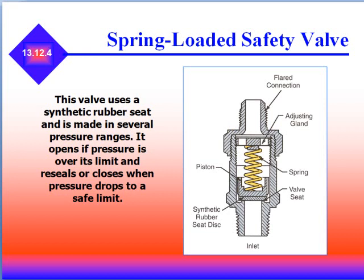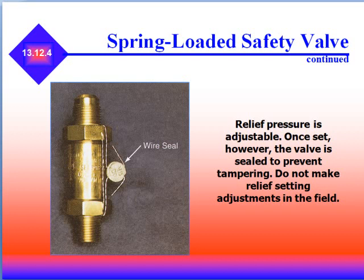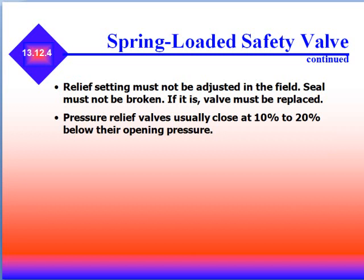The spring-loaded safety valve is another type of relief valve. It uses a synthetic rubber seat and is made in several pressure ranges. It opens if the pressure exceeds its limit and will reseal and close when the pressure drops to a safe limit. Relief pressure is adjustable, but once set the valve is sealed to prevent tampering. Do not make relief setting adjustments in the field — the seal must not be broken. If it is, the valve is required to be replaced. Pressure relief valves usually close at 10 to 20 percent below their opening pressure.